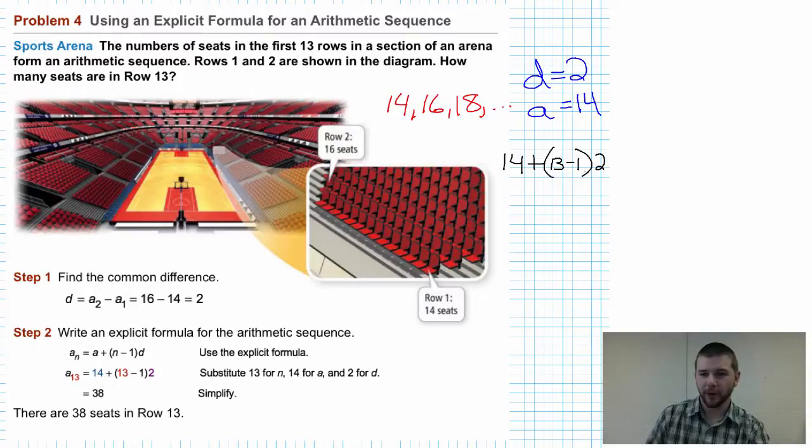12 times 2, 24. 14 plus 24, 38. Thus telling us that row 13 will have 38 seats.